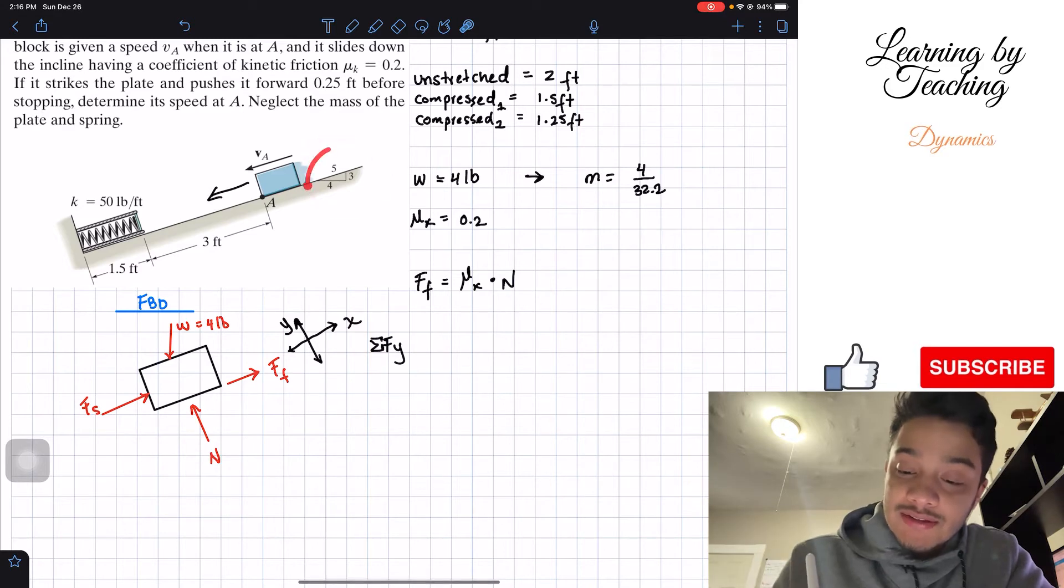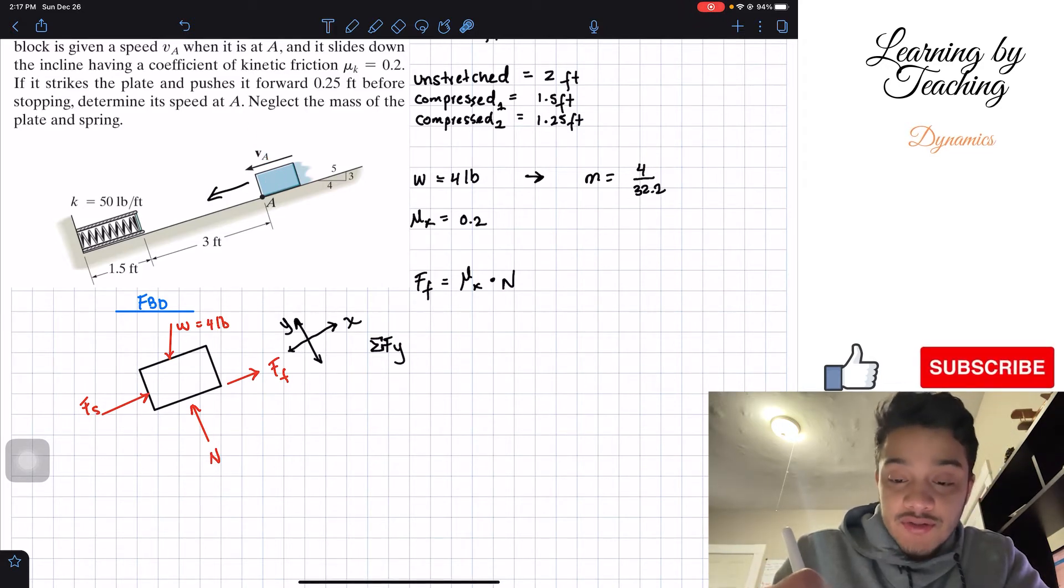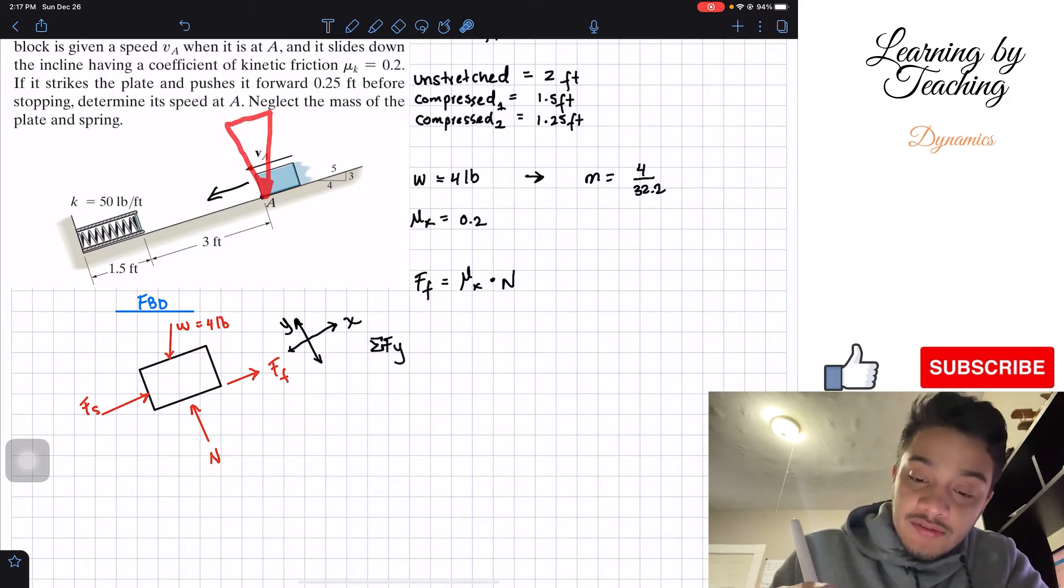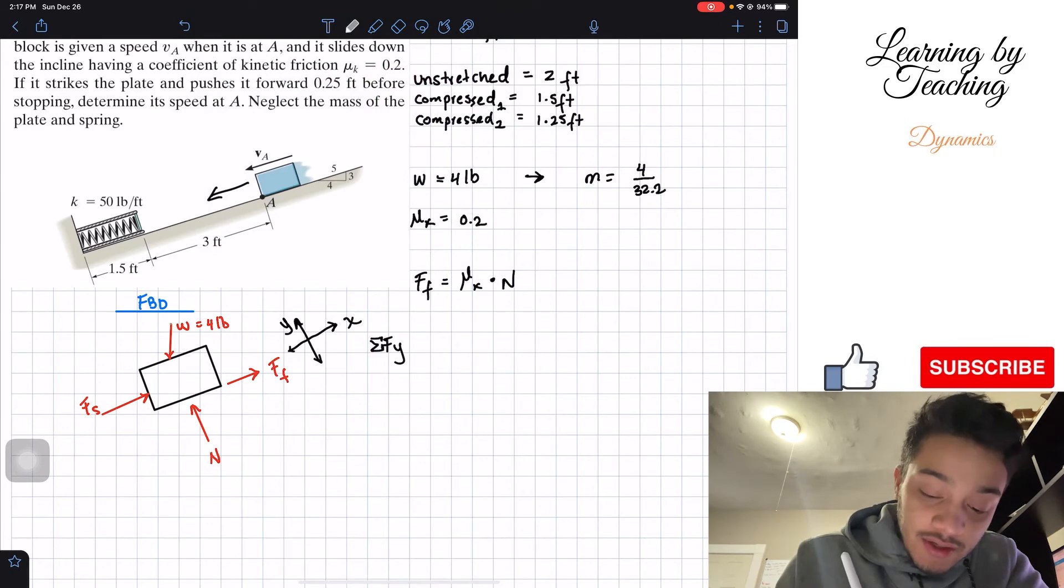So as we can see, F_f is in the x, F_S, and then N is in the y direction. However, my W is not entirely in the y direction. So what we need to do is do a small analysis in here. What we have is that this angle, the angle of the plane, is given by this 3, 4, 5 triangle. Therefore, the weight by just a small, since the weight is in this direction, right, it's like this.